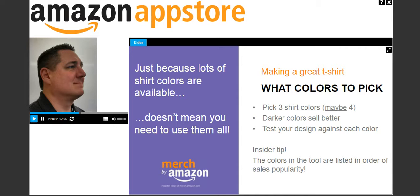Your design may look great against a dark background but need modification to look good against a lighter background. There's nothing wrong with making two different shirts — one design optimized for a dark color T-shirt and one for a light color T-shirt. When you're approved into Merch by Amazon you get the ability to make 25 shirts, so optimizing for both dark and light backgrounds is worth your time. You'll sell more shirts and have happier customers.